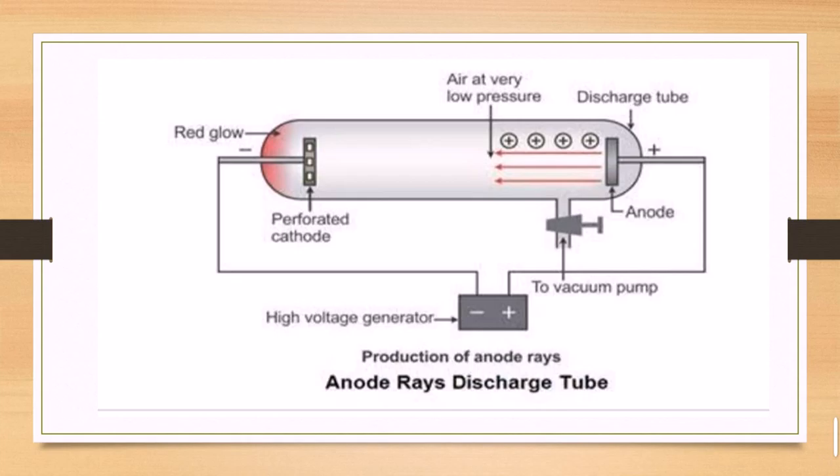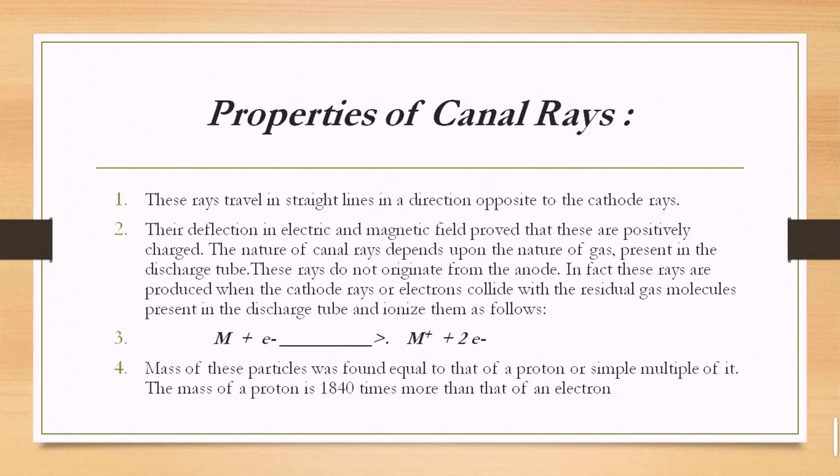The result confirmed the presence of positively charged particles passing through the pores of the perforated cathode electrode — that was the major discovery of Goldstein about the production of the proton. These rays were produced from the anode and passed through the cathode, which is why they were named canal rays in 1886.